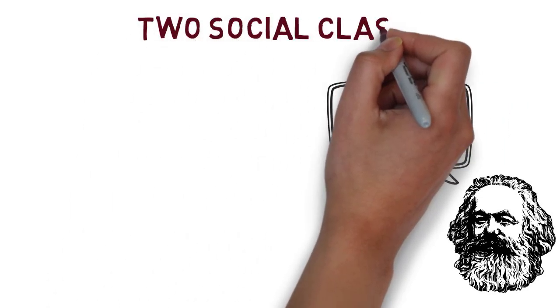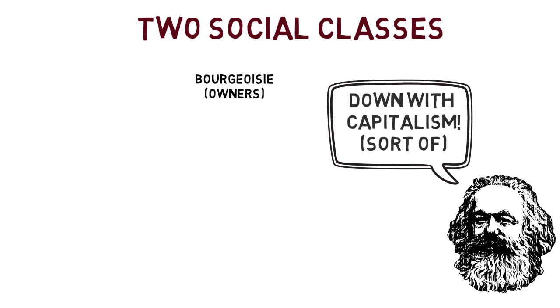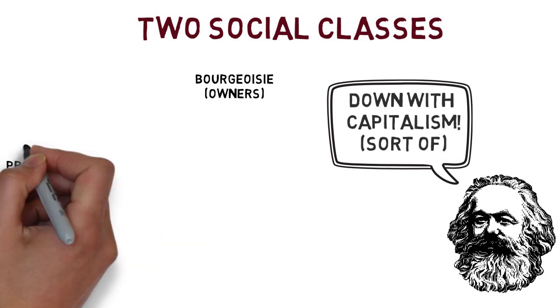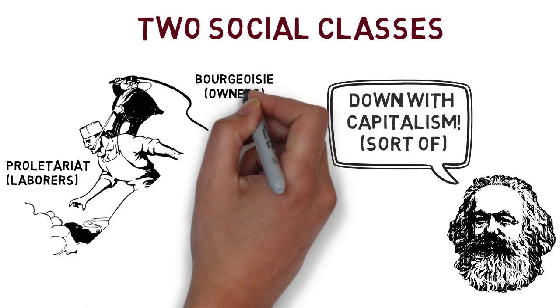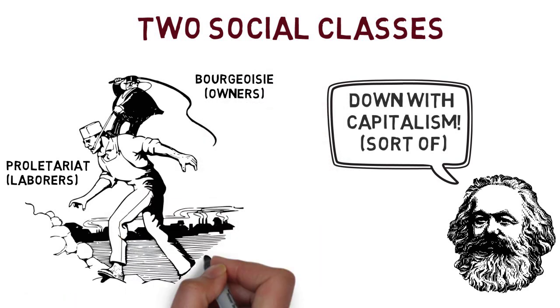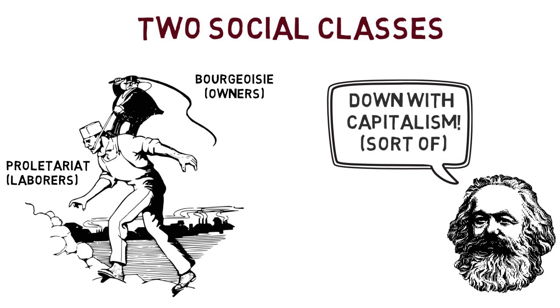Marx identified two social classes in his time: the bourgeoisie and the proletariat. The bourgeoisie owned the product, the means of production, distribution, and the profit. Then there were the proletariat, also known as laborers.